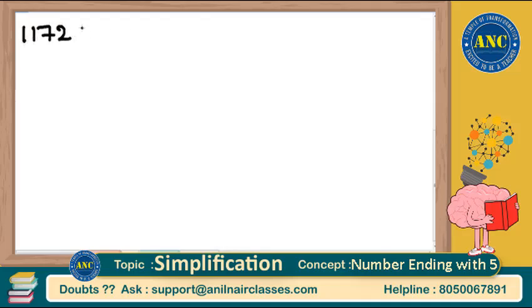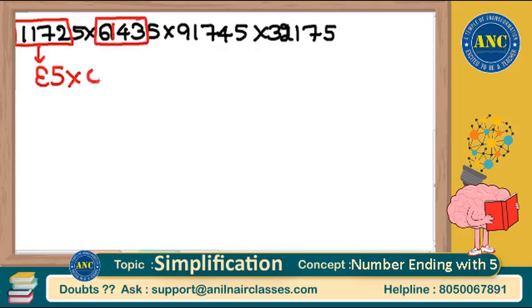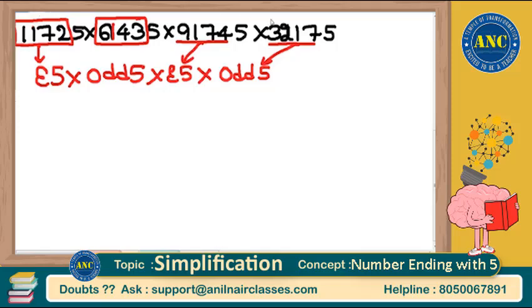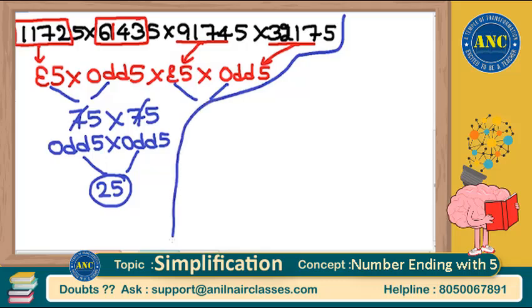Find the last two digits of 11725 × 61435 × 91745 × 32175. Ignore the 5 each time: 1172 ends with 2 — even-5; 6143 is odd — odd-5. Even and odd are different family: result so far is 75. Now 75: ignore the 5, remaining part is 7 — odd; 9174 ends with 4 — even. Odd into even: different family, so 75. Then 75 × 3217 (odd-5): 7 in 75 is odd, odd × odd same family, answer is 25. You can structure these problems and get the answer very easily.